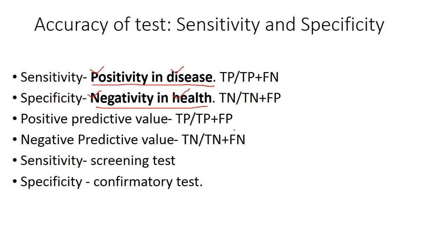For predictive values, all formulas for positive predictive value will contain positives, and all formulas for negative predictive value will contain negatives. In all four formulas, the numerator is the truth — true positivity or true negativity. In real life, truth is valued above everything, and similarly, truth is always on top in these formulas.